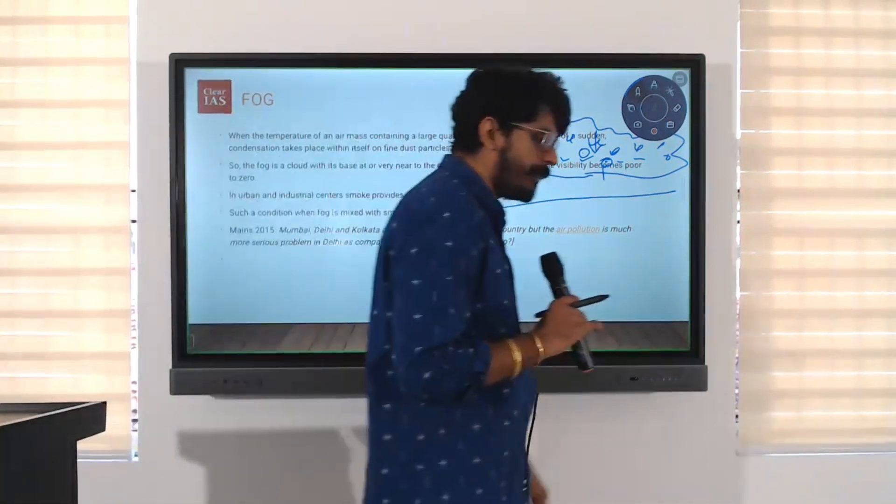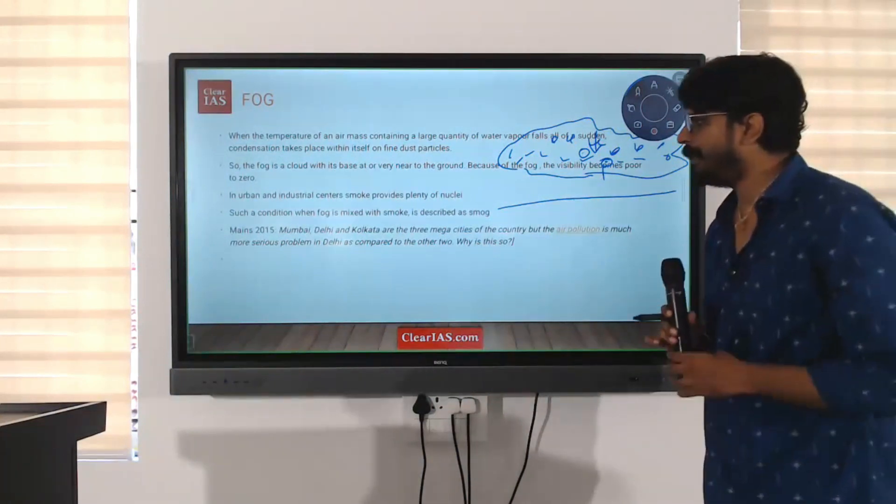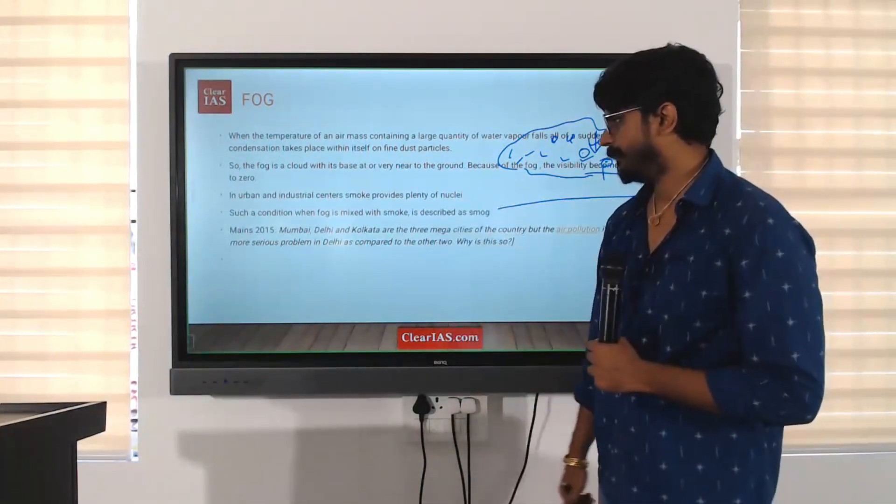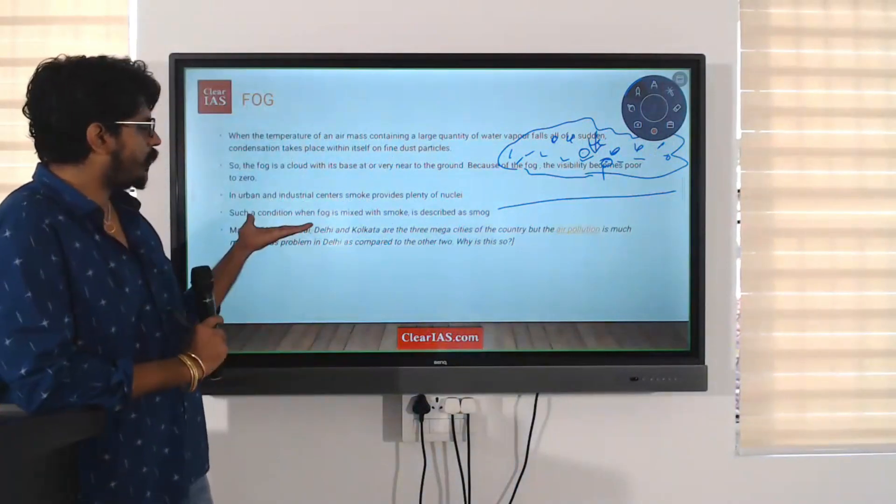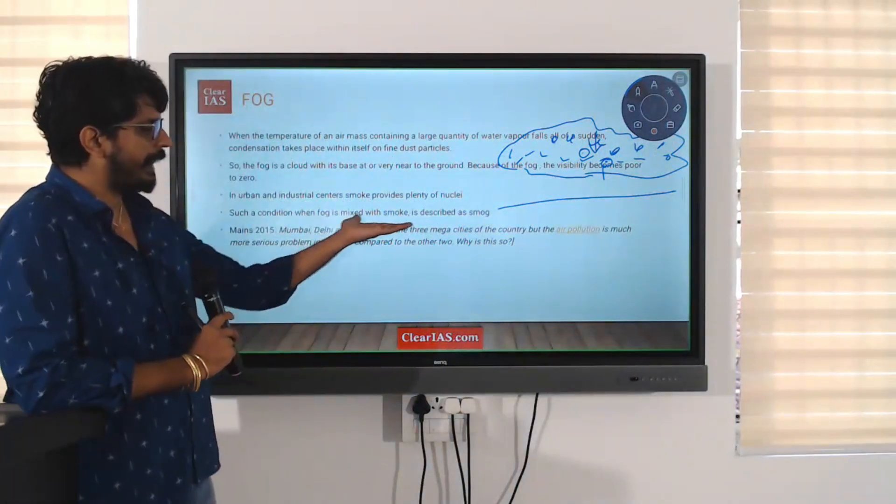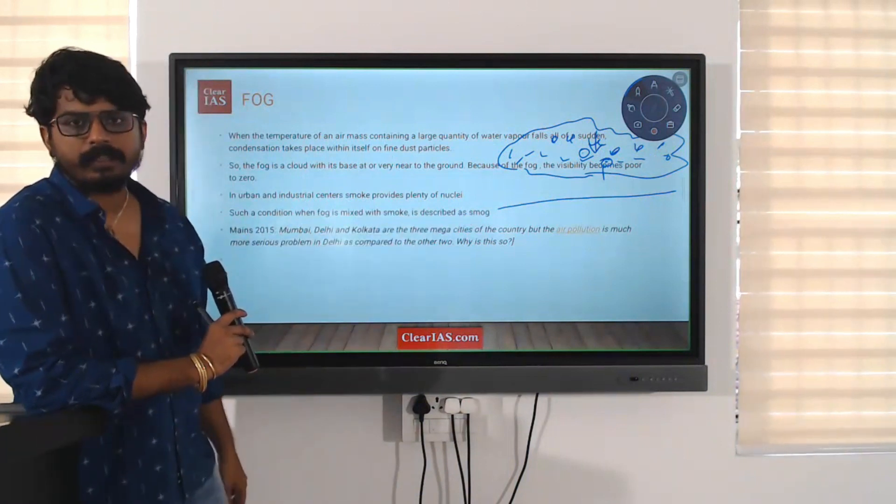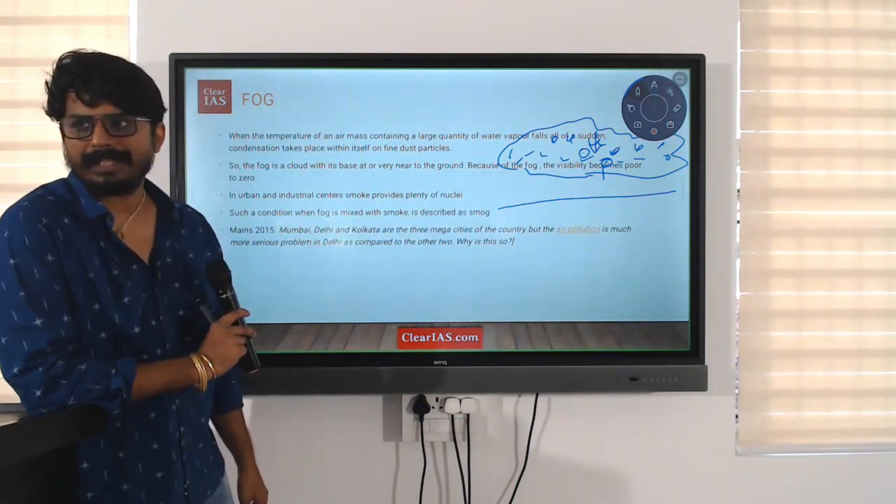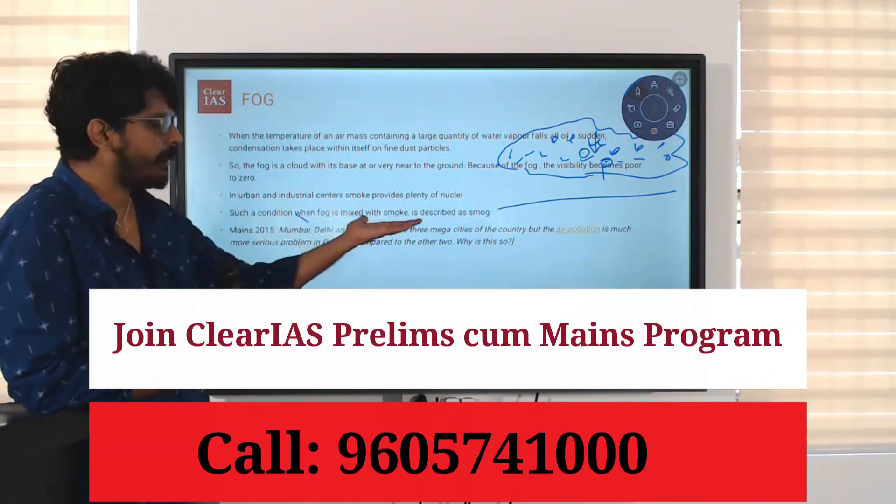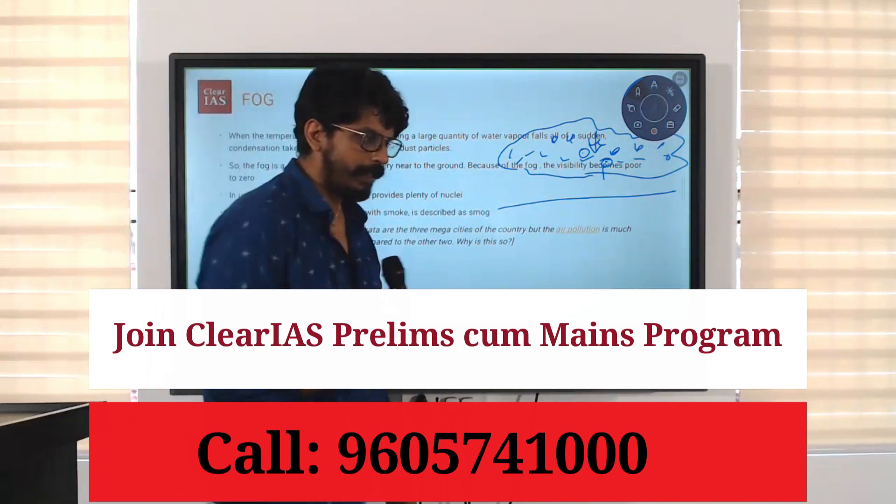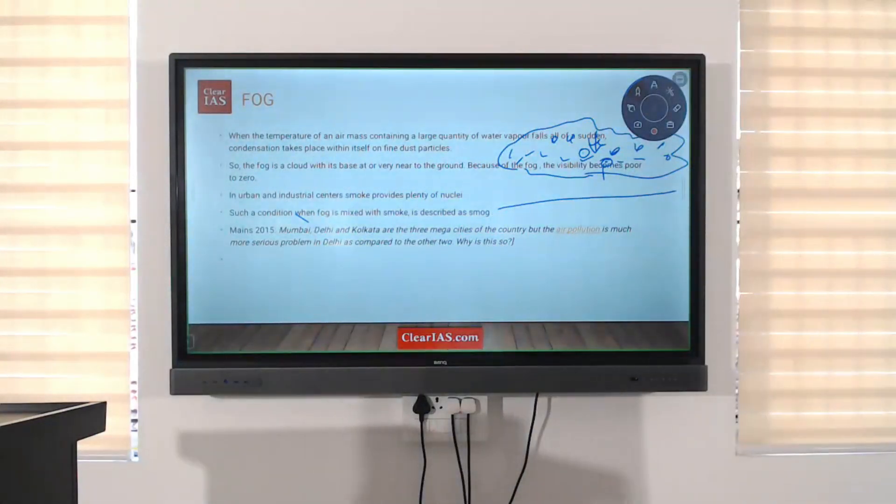In urban and industrial centers, smoke provides plenty of nuclei. And that is still more dangerous. When smoke combines with fog, it creates a health hazard called as smog. Smoke. When smoke combines with fog, it creates a health hazard called as SMOG.